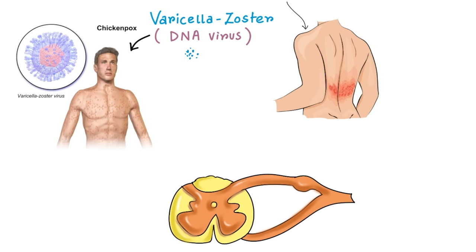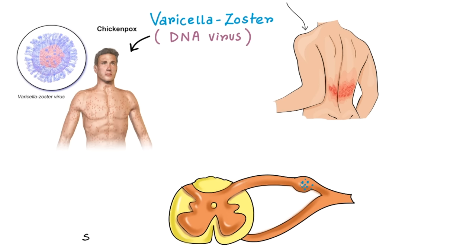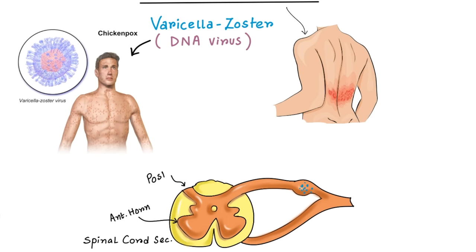After attack of chicken pox, varicella zoster virus remains latent in the dorsal root ganglion of spinal nerves. Here you can see the spinal cord section, here is anterior horn and here is posterior horn. This portion is dorsal root ganglion and here is the latent viruses.